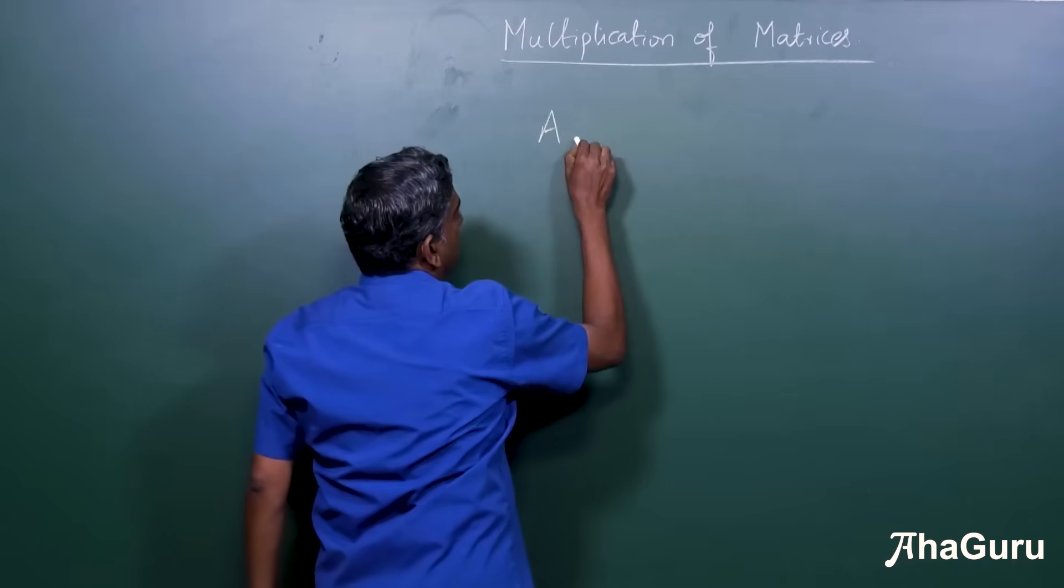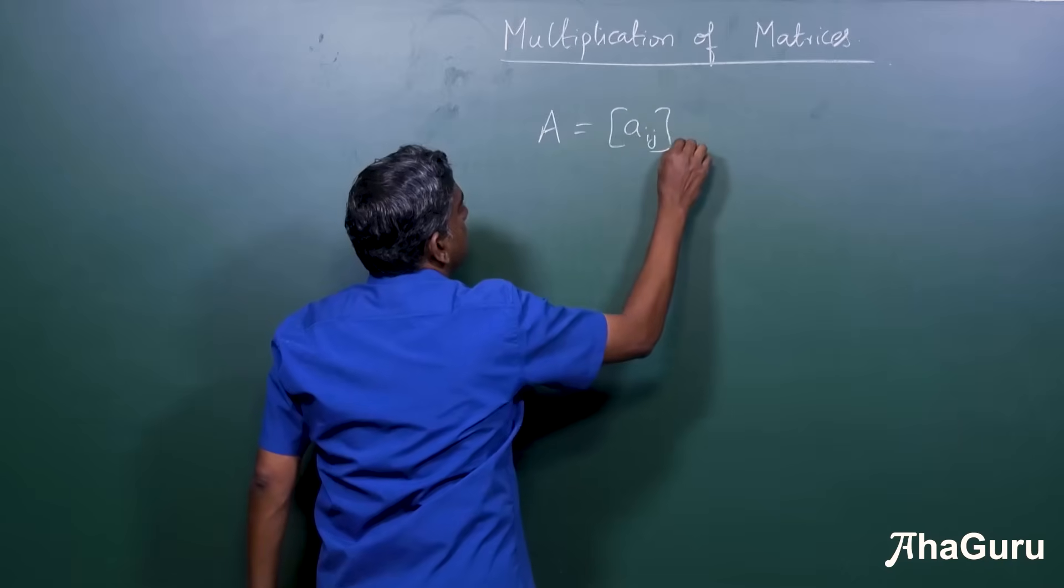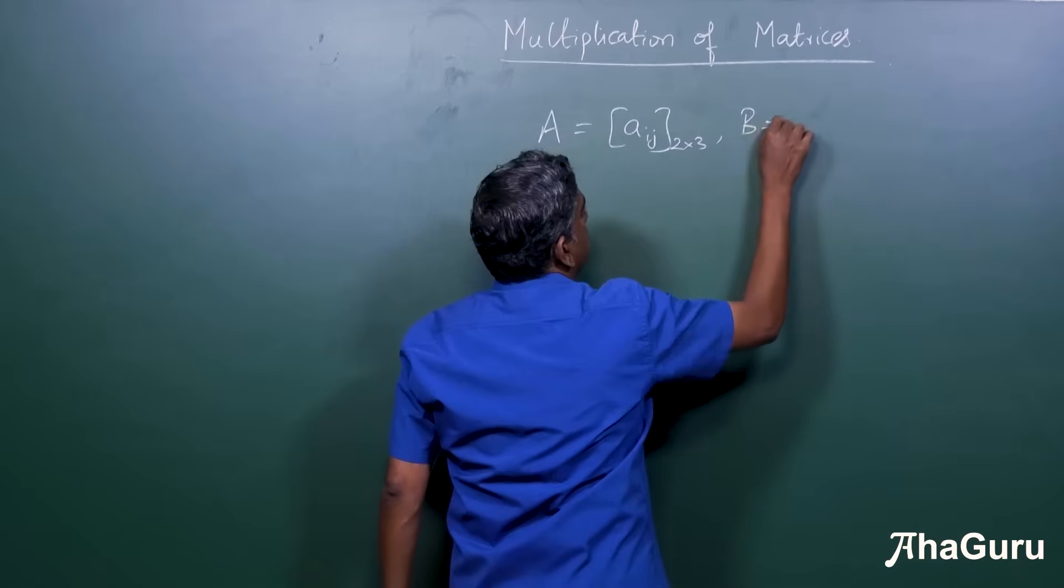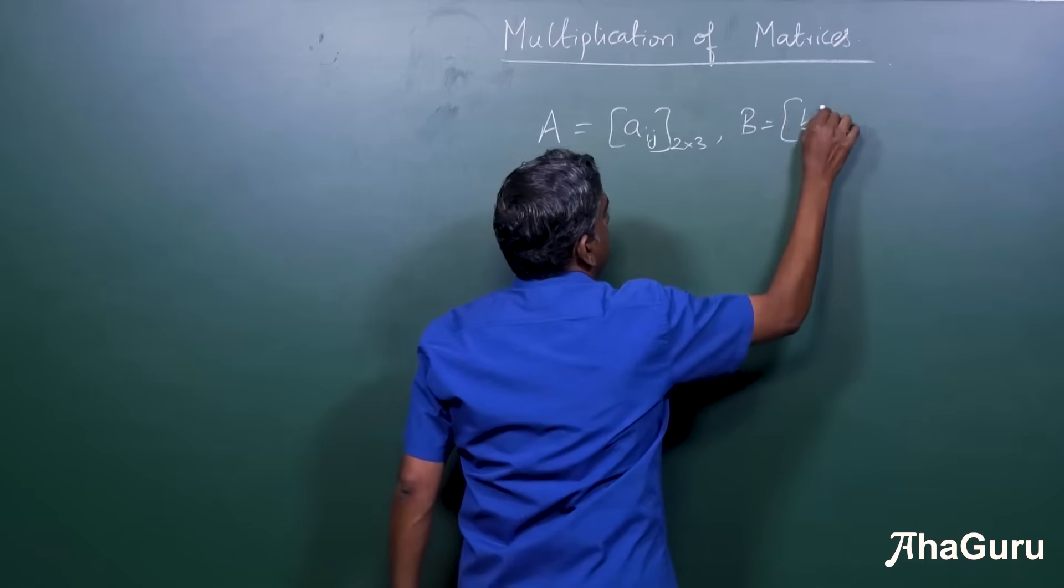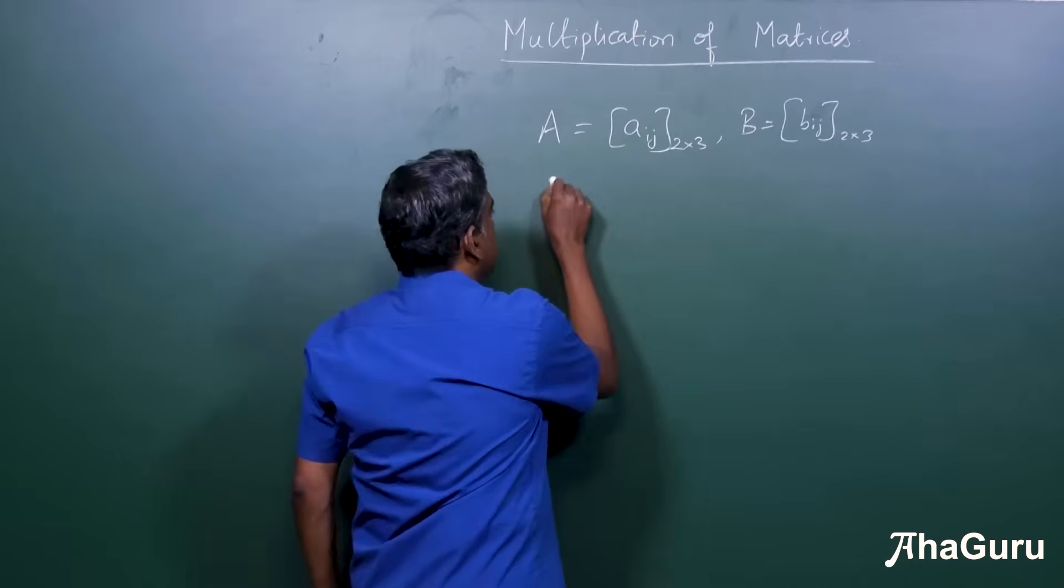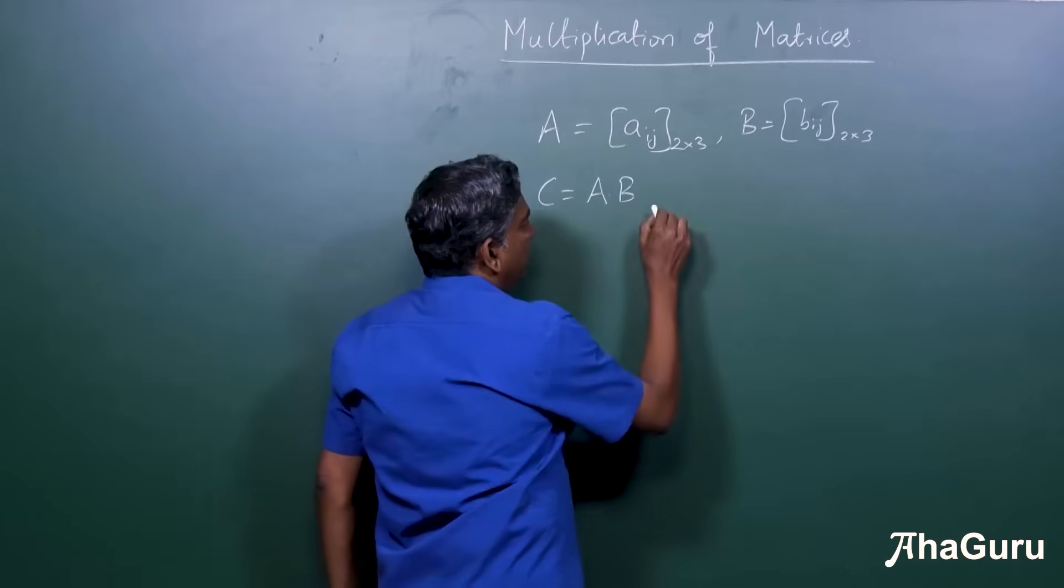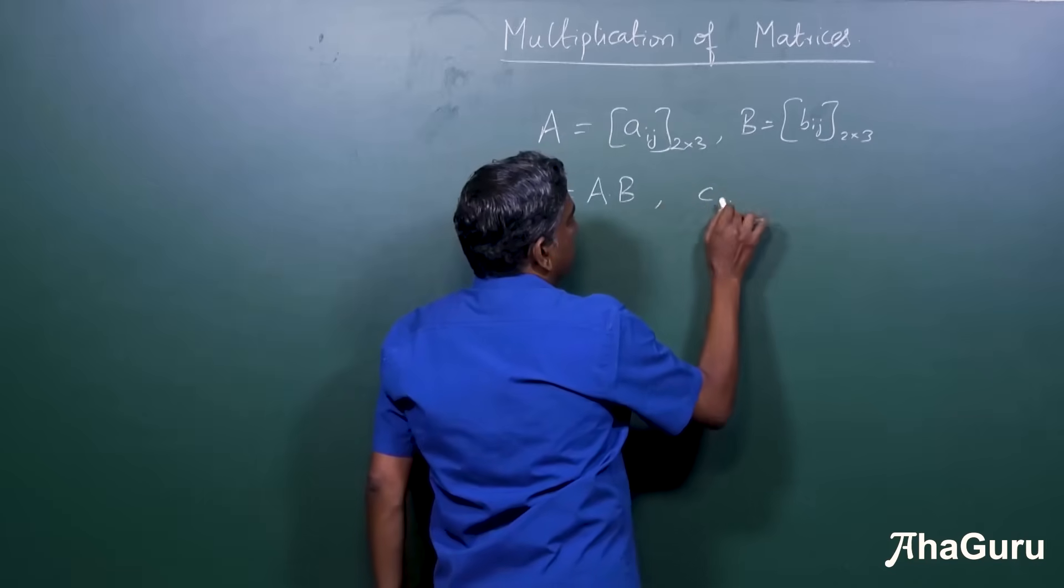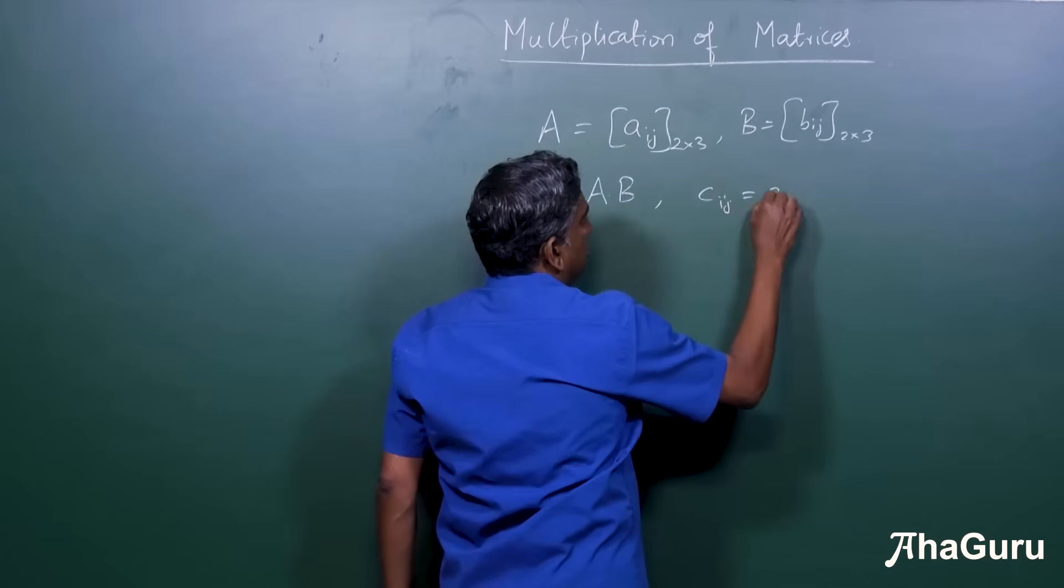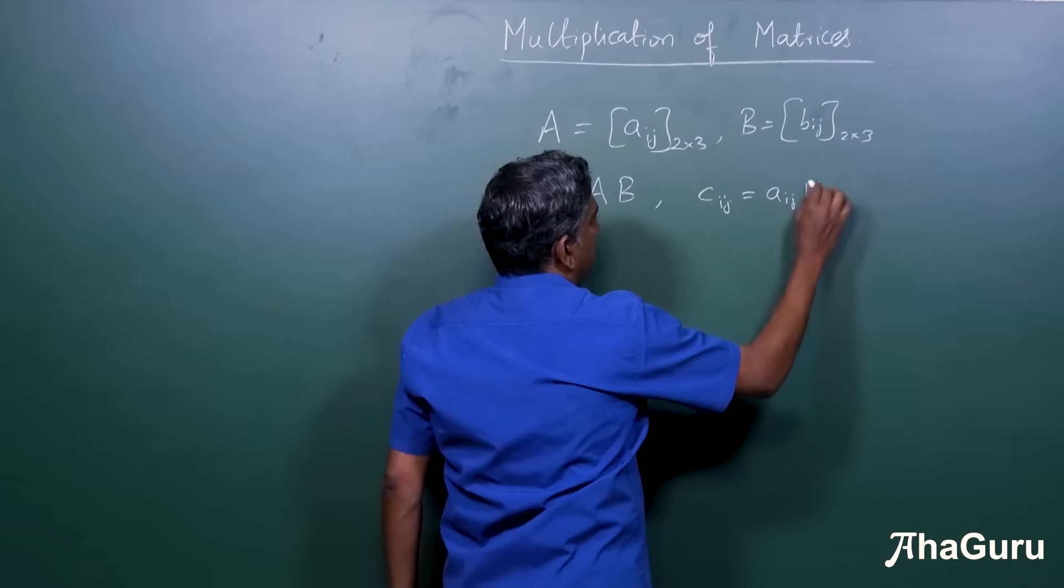For example, if we have A is a 2 by 3 matrix, B is a 2 by 3 matrix, could we have written C is A into B where we can say Cij is equal to Aij times Bij?